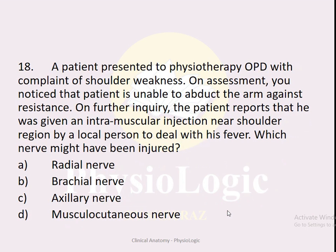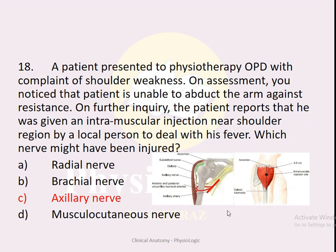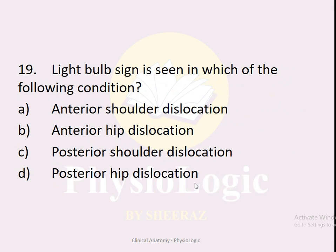MCQ number eighteen: A patient is unable to abduct the arm against resistance and reports having received an intramuscular injection near the shoulder region by an untrained person. Options: A — radial nerve, B — brachial nerve, C — axillary nerve, D — musculocutaneous nerve. The correct option is C — axillary nerve. Abduction is performed by the deltoid muscle (along with supraspinatus and trapezius), supplied by the axillary nerve, which may have been damaged by the improper injection.